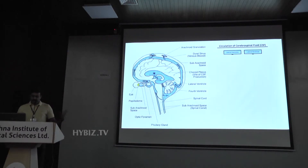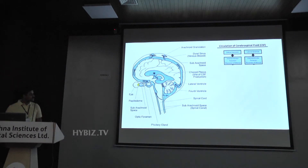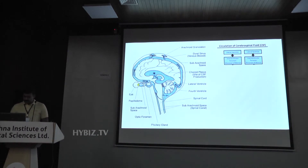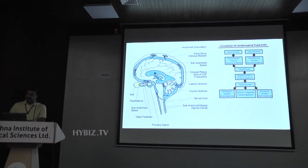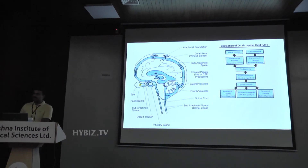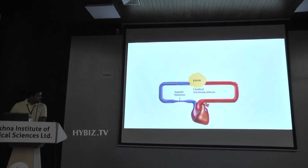The rate of production of CSF is approximately 500 ml per day, and this 500 ml keeps circulating. This is a very schematic diagram showing the lateral ventricles. From the lateral ventricles, through a small corridor called the foramen of Monroe, it reaches another box called the third ventricle, and from the third ventricle to the fourth ventricle through the aqueduct.